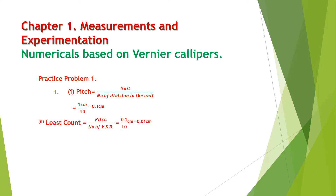The second part: we need to calculate the least count. Least count is equal to one main scale division over number of vernier scale divisions, which is 0.1 centimeter over 10, so that is 0.01 centimeter.